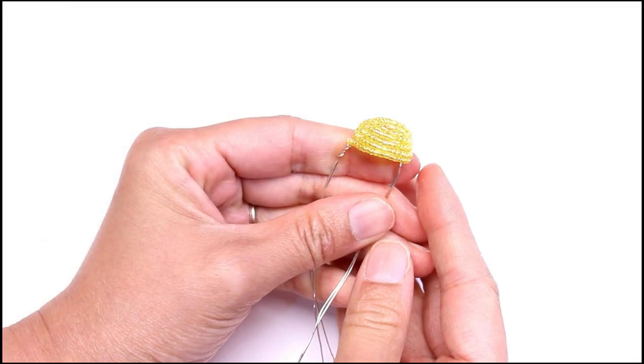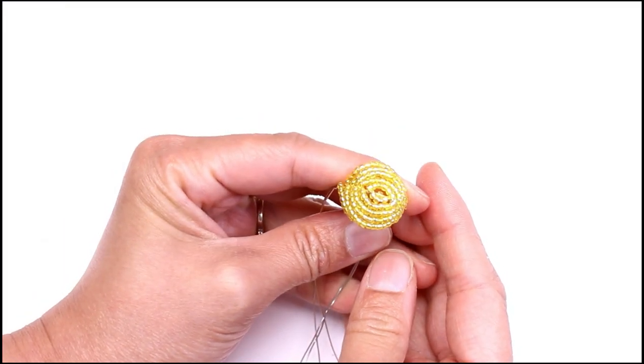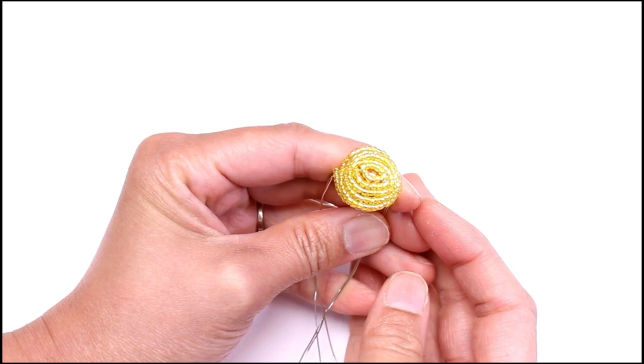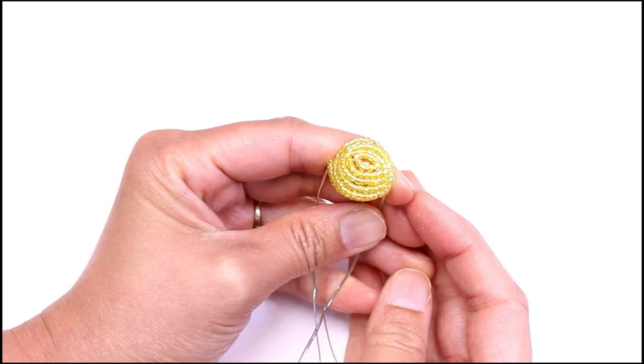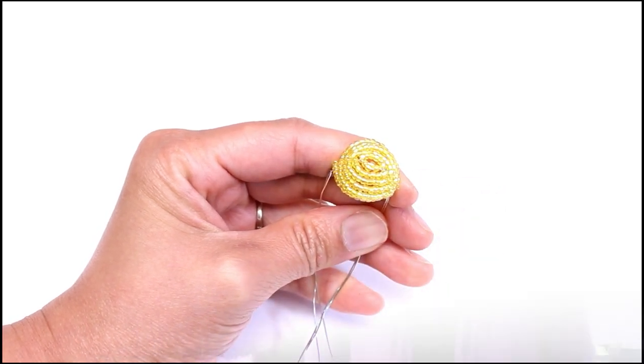So here we have a beehive with a one bead basic rounded top rounded bottom with 12 rows. And the next lesson will be working on the leaves.